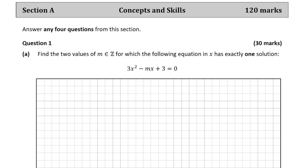Question one part A asks us to find two values of M for which the following equation in X has exactly one solution. The wording of this question can be rephrased as: it has one root. If it has one root, the graph is going to touch the X-axis at one point — not two roots where it would hit the X-axis in two different points.